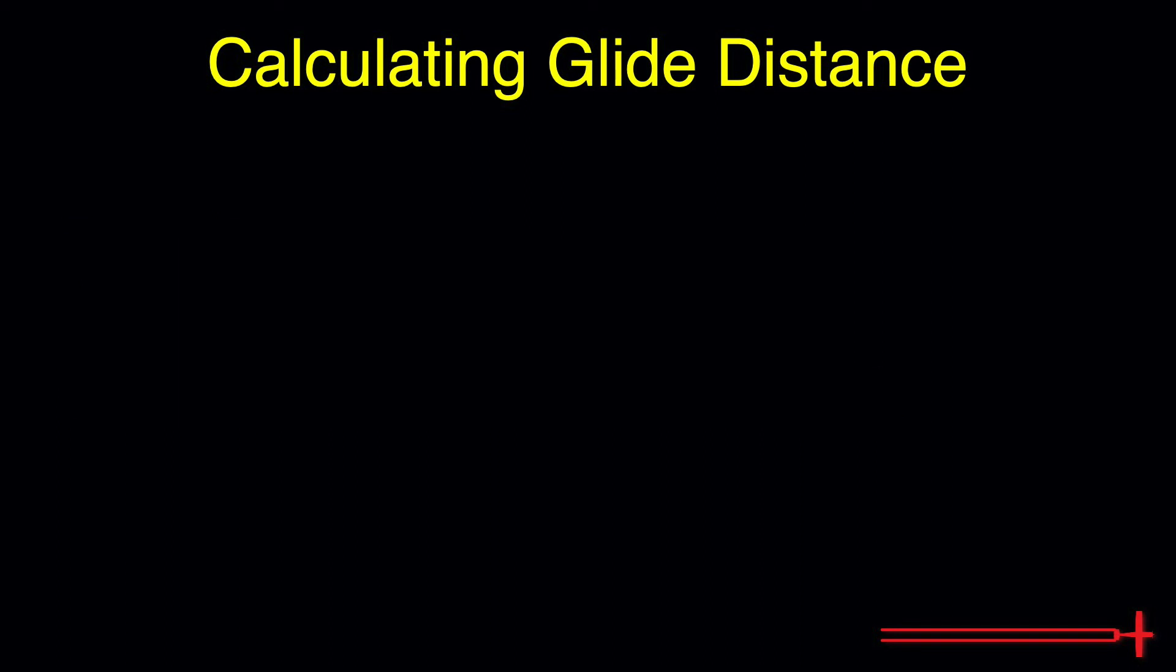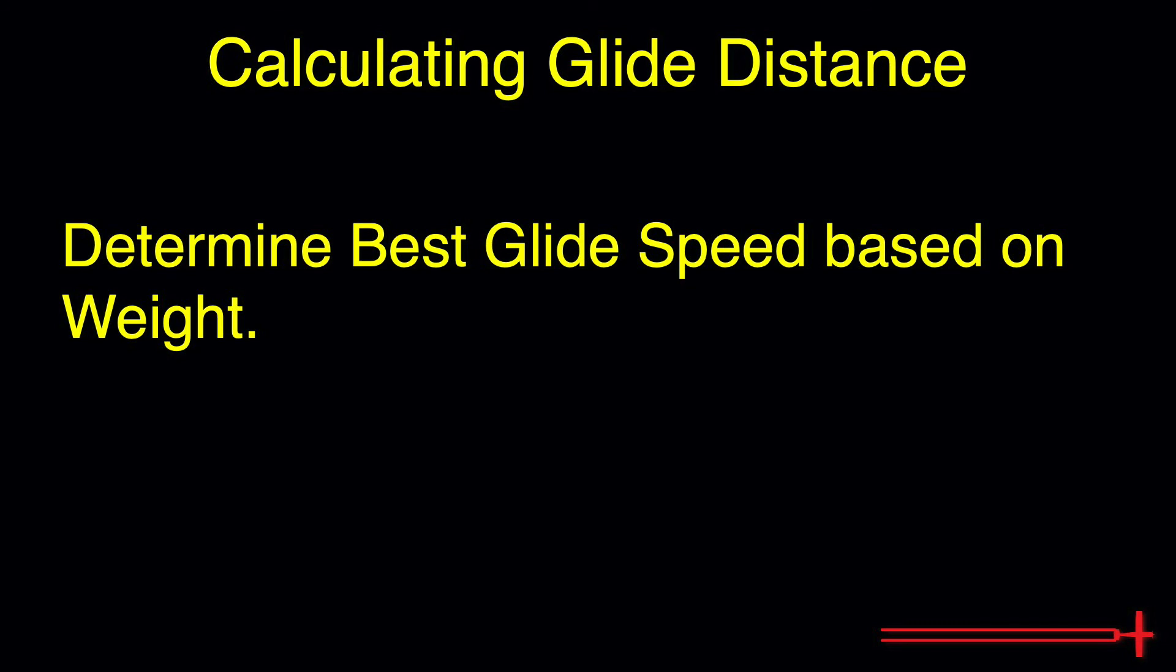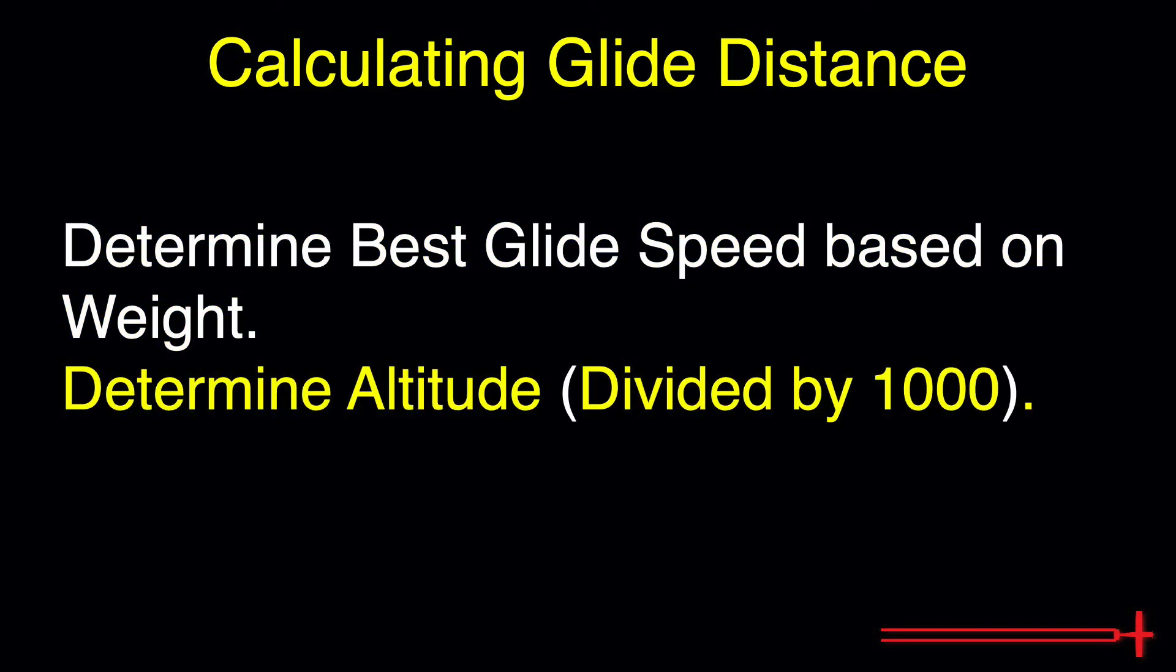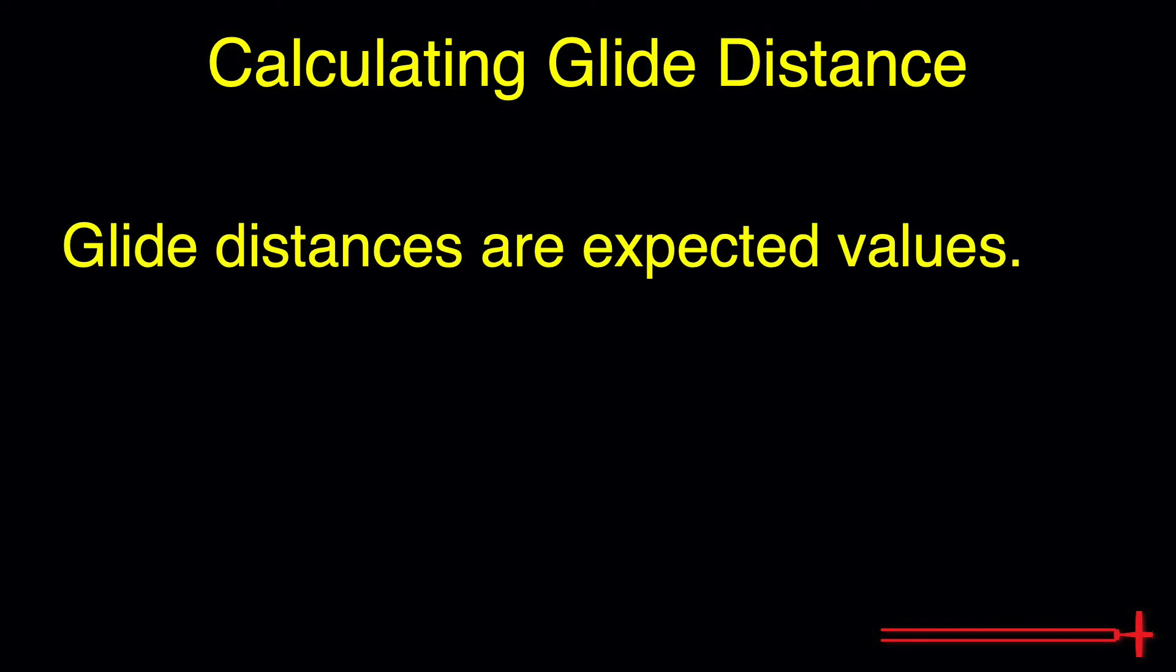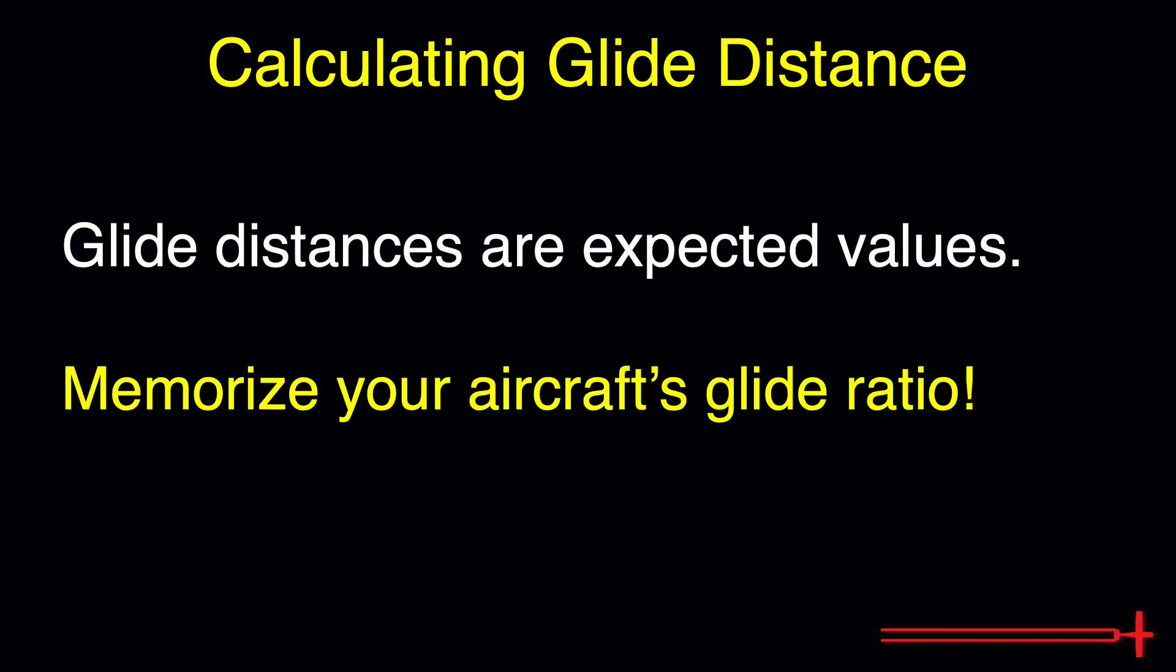To recap how to find glide distance in the DA-40, simply determine the necessary speed based on weight, take your altitude divided by 1,000, and multiply by our glide ratio in order to find your expected glide distance. In this case, the glide ratios to be expected are 1.45 if the prop is still spinning and 1.7 if it's not. Remember, these values are only expected values. It is always a good idea to get out there and make note of the glide ratios to be expected in actual flight. Having that number memorized may help out one day in an emergency.